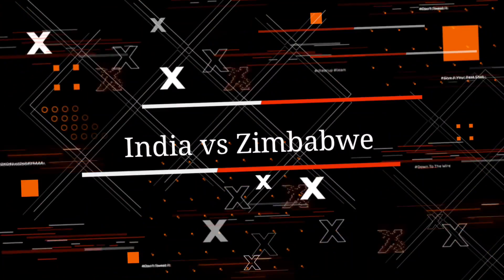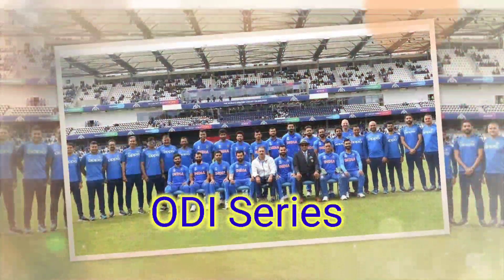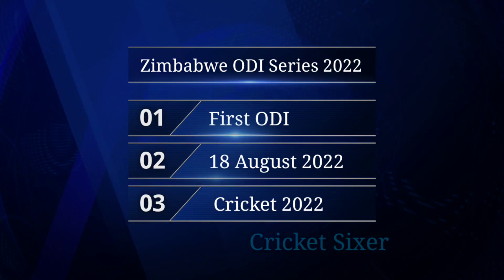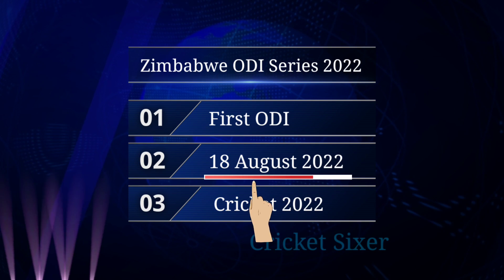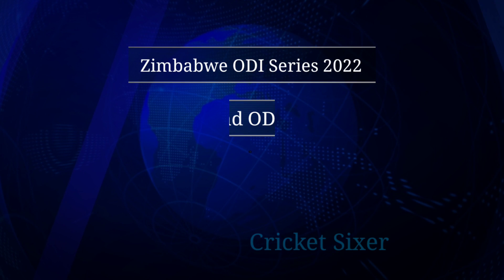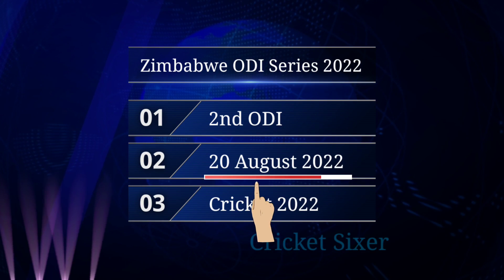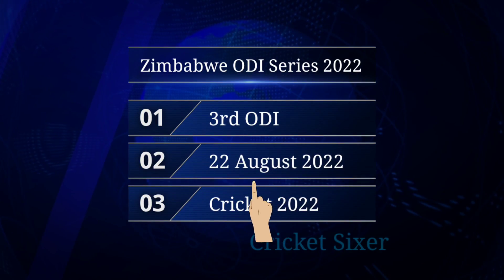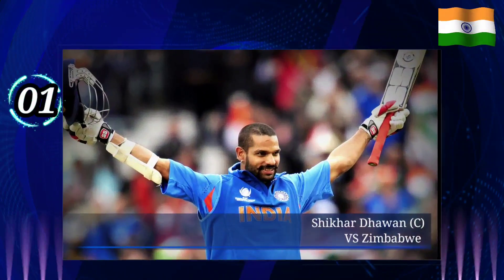India vs Zimbabwe 2022 ODI Series Schedule and Final Score. India vs Zimbabwe 1st ODI: 18th August 2022. 2nd ODI: 20th August 2022. 3rd ODI: 22nd August 2022.